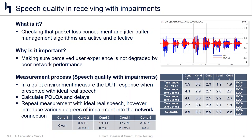Stepping up to condition five — the worst case scenario — POLQA scores drop significantly and should be addressed. Three percent packet loss is a little on the high side but not atypical for a VoIP network, so these test cases do make sense in terms of real-world network conditions.